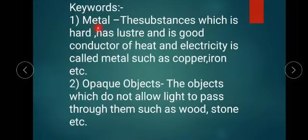First keyword: Metal. The substances which are hard, have luster, and are good conductors of heat and electricity are called metals, such as copper and iron. We have many examples of metal such as copper, iron, etc.